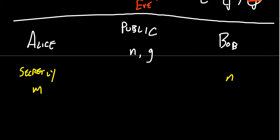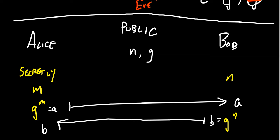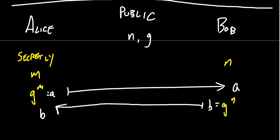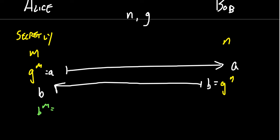So secretly, Alice is going to choose some number m, and Bob is also going to choose some number n. And so then what Alice does is she's going to compute g to the m. This is going to equal some number a, and she's going to transmit that to Bob. So Bob receives an a. On the other hand, Bob is going to compute g to the n, which we're going to call that number b, and then he sends b to Alice. So Alice will then compute b to the m, which, since b is g to the n, this will give g to the m n. And on the other hand, Bob computes a to the n, which as a equals g to the m, you raise that to the n power, that's going to give you g to the m n. And so you'll notice that they're able to compute the exact same number.